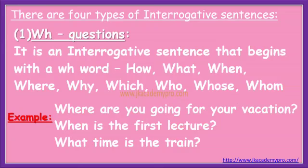The first type is WH questions — interrogative sentences that begin with a WH word: how, what, when, where, why, which, who, whose, whom. For example: 'Where are you going for your vacation?' 'When is the first lecture?' 'What time is the train?'